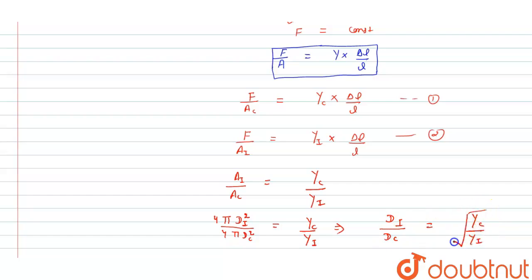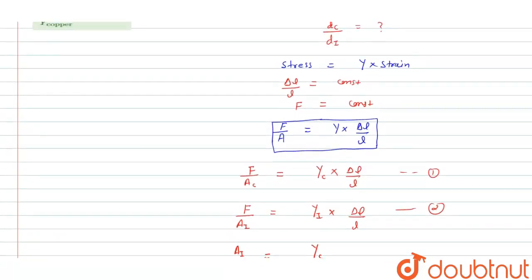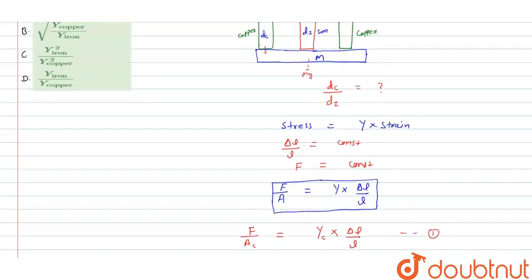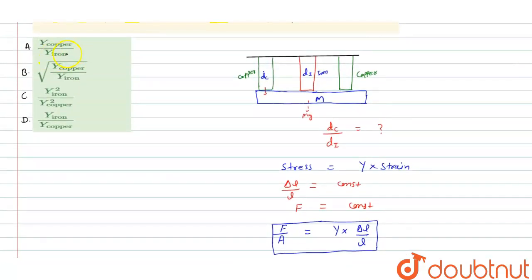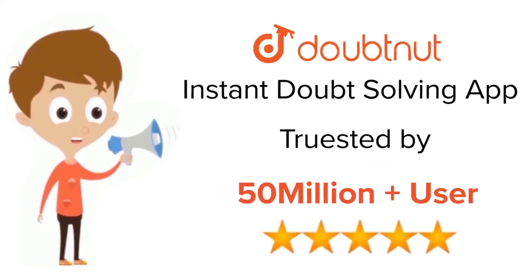Taking the reciprocal, d-c upon d-i equals the square root of Y-i upon Y-c — wait, rearranging properly: d-c upon d-i equals the square root of Y-copper upon Y-iron. Checking the options: option A, Y-copper upon Y-iron, is incorrect; option B, root of Y-copper upon Y-iron, is the correct answer. I hope you understood the solution.